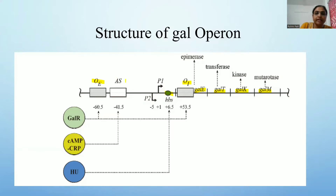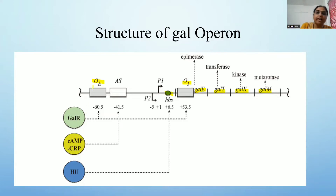There is also an activator binding site called AS, where the activator — the cyclic AMP-CRP complex — binds. The repressor is GAL-R, and GAL-R binds to the two operators OE and OI.